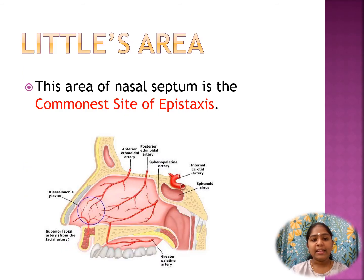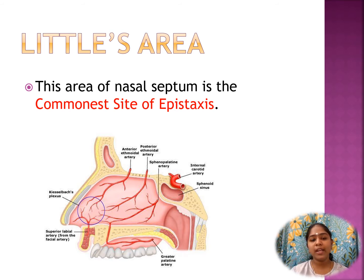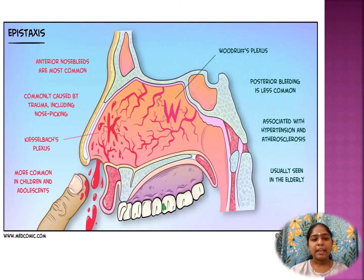Little's area is the commonest site of epistaxis, also known as nasal bleeding. Epistaxis in children and young adults is very common due to fingernail trauma following pricking of the nose. Epistaxis is of two types: anterior nosebleed and posterior nosebleed. The anterior nosebleed is the most common, while the posterior nosebleed is less common.